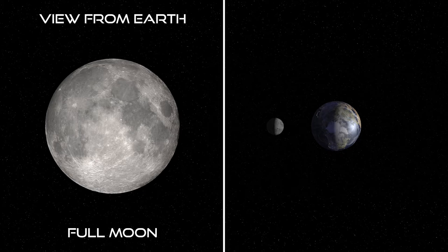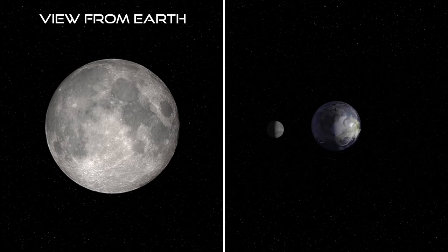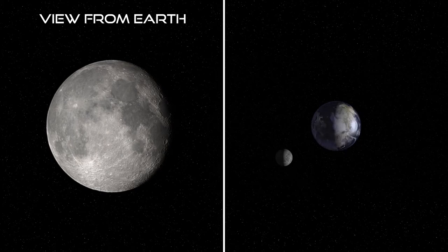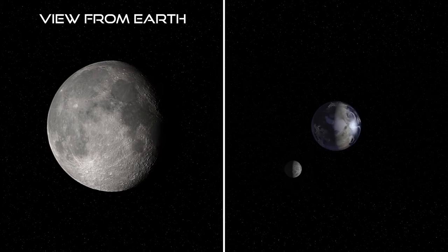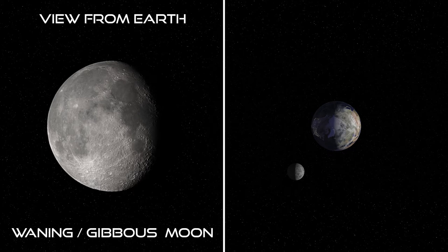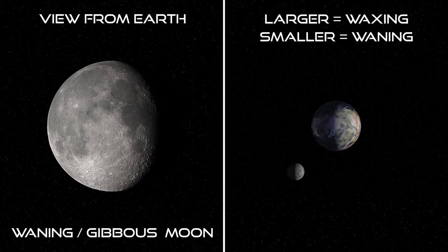The Moon and Sun are now on opposite sides of the Earth. As the Sun sets in the west, the full Moon will rise in the east. Now the Moon will begin to get smaller in size as we see here on Earth. This is called a waning Moon, and it's also gibbous. So as the Moon gets larger it's waxing, and as it gets smaller it's waning.